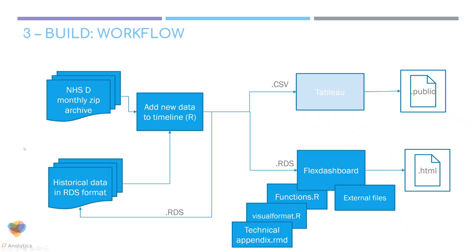In terms of the build workflow: every month I download the zip archive from NHS Digital — I know I could probably scrape it, but writing that script takes as long as manually downloading it. That goes into a new RDS file attached to the bottom of my historical data. I maintain a historical RDS file and add new data each month. I also produce a CSV file for Tableau. The RDS file then passes into flexdashboard along with various other resources to produce the HTML file. It's a very modular construction.